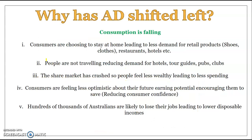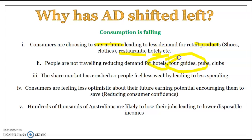There's a range of reasons why aggregate demand has fallen, but the main one has been a fall in consumption. People have been choosing to stay at home to avoid spreading the virus, leading to a massive drop in demand for a whole range of products — from retail products like shoes, to restaurants, hotels, tour guides, pubs, and clubs, as people aren't allowed to travel or congregate.